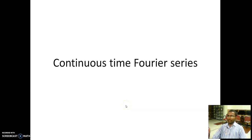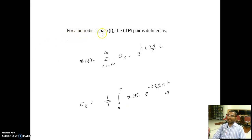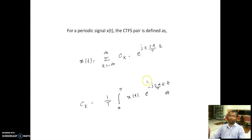Good evening one and all. In this class, we have started with the continuous time Fourier series. For a periodic signal x(t), the continuous time Fourier series pair is defined as x(t) equal to summation over k equal to minus infinite to infinite, c_k times e to the power jk 2π/T times t. Here capital T is the fundamental time period, equal to 1 over the fundamental frequency. And c_k is the Fourier series coefficient, given by 1/T times the integral over 0 to T of x(t) multiplied with e to the power minus j 2π/T times kt dt.